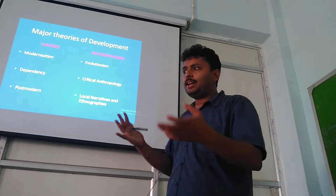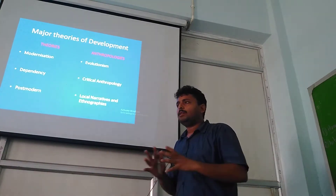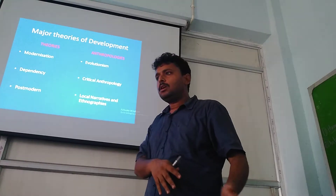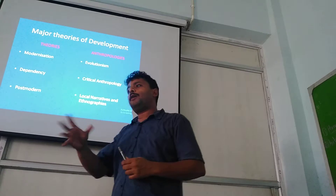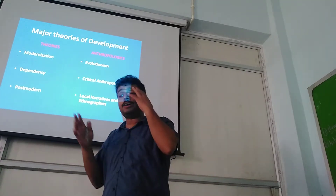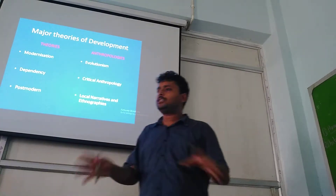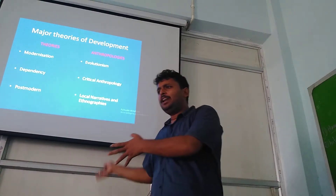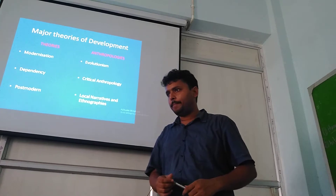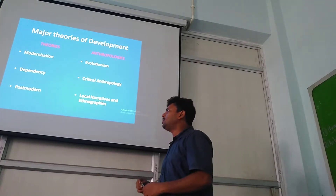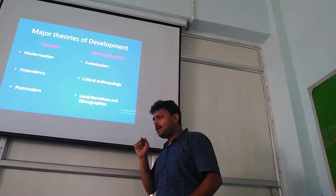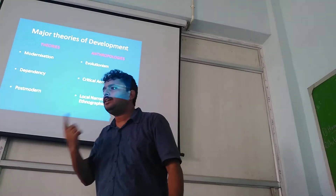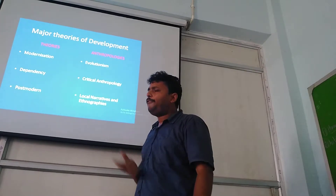Agencies like DFID — all these different institutions are part of it. These are all development institutions that collect funds from the first world countries and then distribute them to poorer nations, including India, Bangladesh, different African nations, etc. Now dependency theorists argue that by injecting funds and transferring technology, different things are happening.